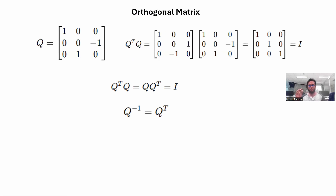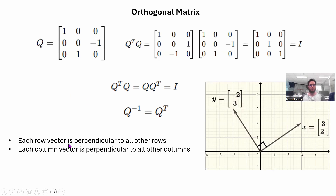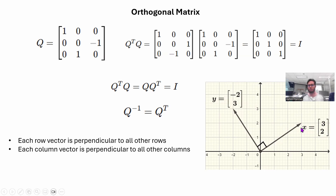Going deeper, each row of an orthogonal matrix can be thought of as a vector. Each row vector is orthogonal — perpendicular — to all other rows. If you do a dot product between any two row vectors, you get zero, meaning the angle between them is 90 degrees. The same holds for columns: each column vector is also perpendicular to all other columns. This is why orthogonal matrices are important for eigen decomposition.